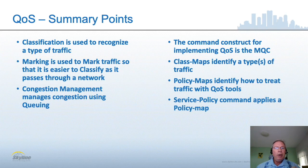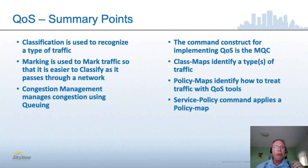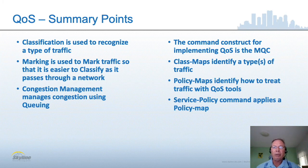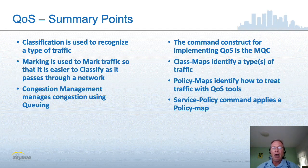That concludes the discussion of queuing. Classification is implemented to teach a device to recognize one type of traffic versus another. Marking is used to mark traffic so it's easier to classify as it passes through the network. Congestion management is queuing — what we talked about today. The command construct for implementing QoS is called the MQC, or Modular QoS Command Line Interface. We use class maps to identify one or more types of traffic, a policy map to define how traffic is treated, and a service policy to apply those settings to one or more interfaces.